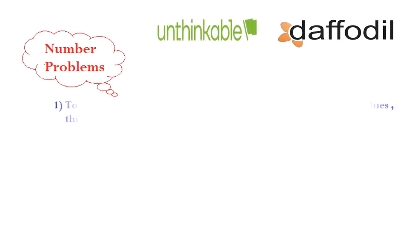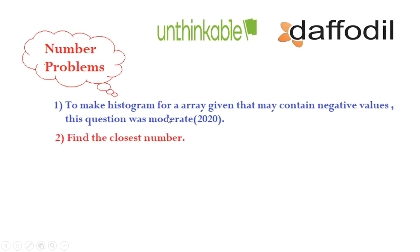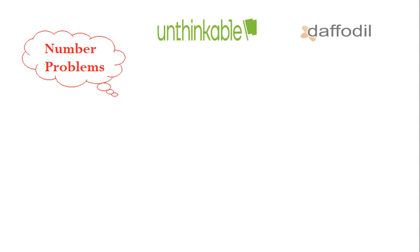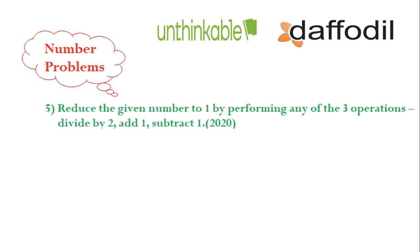For number-based problems, one task is to make a histogram for a given array that may contain negative values — this was asked in 2020. Other questions include: find the closest number by calculating minimum steps, find the missing numbers, swap two numbers without using a third variable, and reduce a given number step by step by performing any of three operations: divide by two, add one, or subtract one — also asked in 2020.